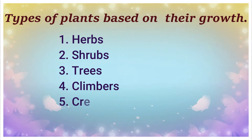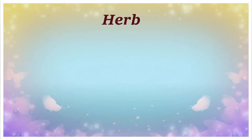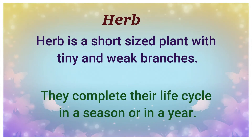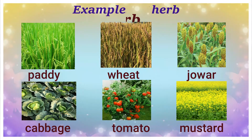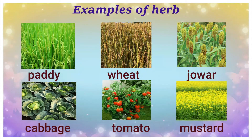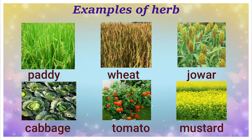Let us learn about each type one by one with examples and characteristic features. First: herbs. A herb is a short-sized plant with tiny and weak branches. They complete their life cycle in a season or in a year. Examples of herbs include grasses and all grass families like paddy, wheat, jawar, bajra, and other plants like cabbage, tomato, and mustard.